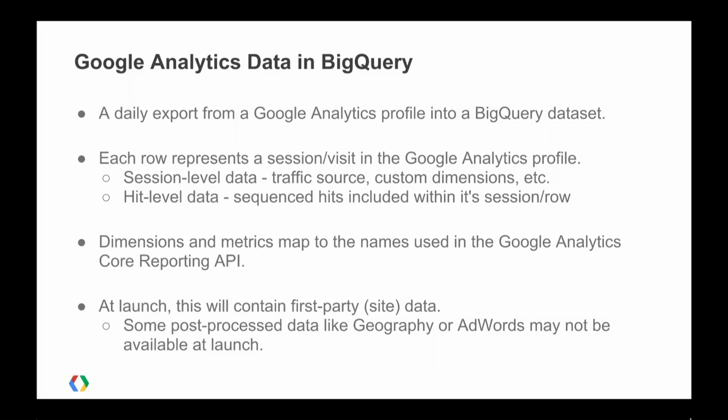Where possible, we are using the same dimension and metric names that we use for the core reporting API in Google Analytics as the column names in BigQuery. So if you already use the core reporting API, you'll have familiarity with the dimension and metric names in BigQuery. One important note is that at launch this will contain first-party data — meaning data collected by the Google Analytics measurement protocol, tracking code, or mobile SDKs. Some data like GOIP lookups and geography data that's post-processed might not be available at launch in September, but we'll continually expand the dimensions and metrics we pass through.